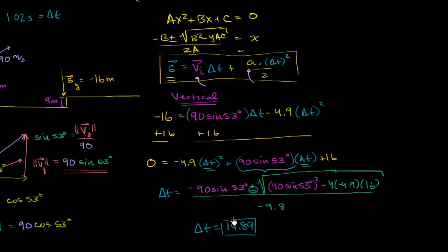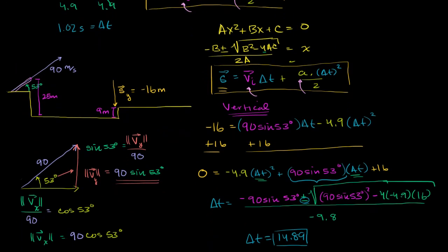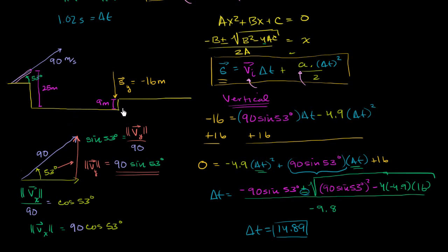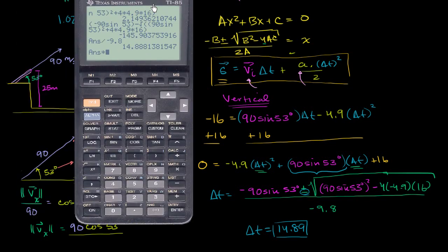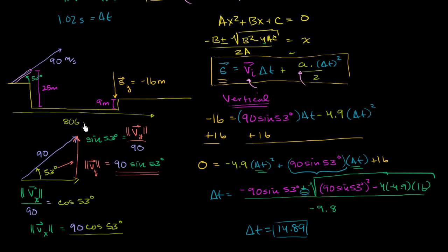The amount of time in the air is 14.89 seconds. To find the horizontal displacement, we multiply that time by our constant horizontal velocity — 90 times cosine of 53 degrees. Taking our previous answer of 14.89 seconds times 90 cosine of 53 degrees gives 806 meters. So the horizontal displacement is 806 meters.